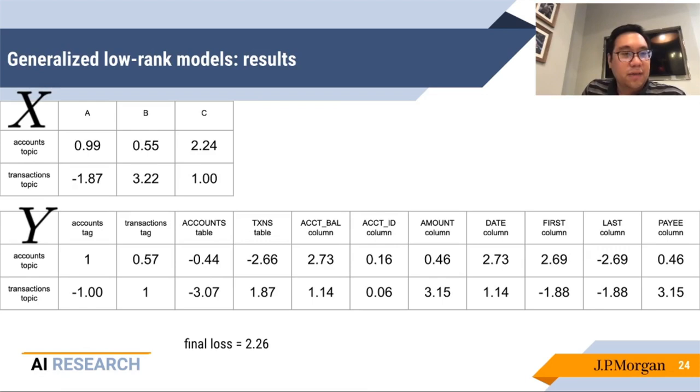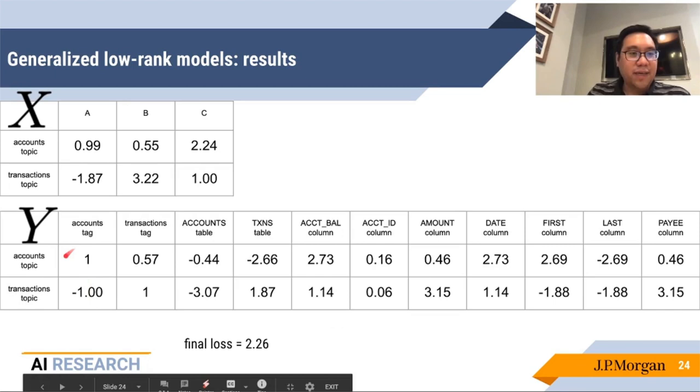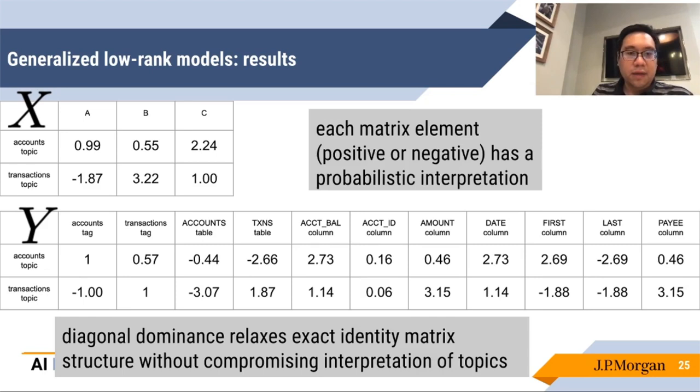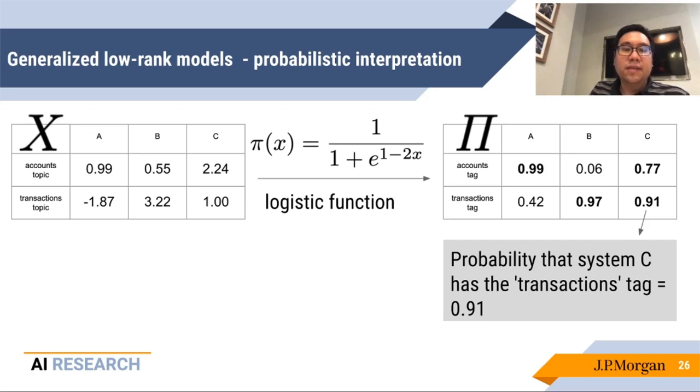For this toy system, we have this particular factorization. We still keep the fact that the first row is primarily about accounts because this is the largest of the two. And similarly, we see that the second row is still mostly about transactions, but not exclusively because the tag here is still the largest, but there is a negative component here. Now, the negative components still exist, but we have a way to interpret these now. As it turns out, the way we should think about this is that these are effectively logarithmic odds ratios. And if we invert them back into probabilities using the logistic function, this gives us the answer to the original problem that we wanted to solve. In particular, if you look at the results for system C, we see that there is a 77% probability that system C should be about accounts, and also a 91% probability that system C is about transactions. And this solves the original problem.